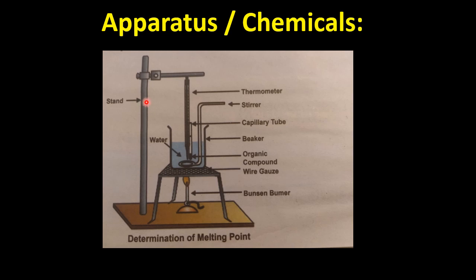Why do we need this iron stand? To hang and clamp the thermometer. We need a thermometer to measure the temperature or heat. After that, we need a capillary tube, which is a small glass tube. The thermometer and capillary tube should be bound together with thread at the base level. They both should be on the same level.